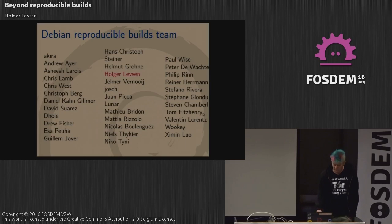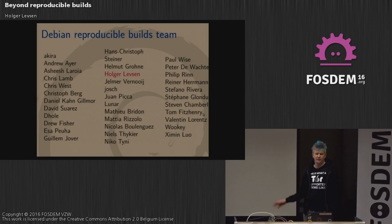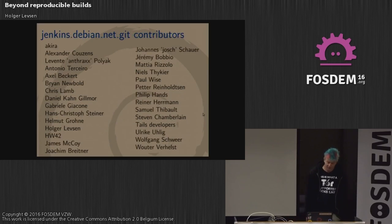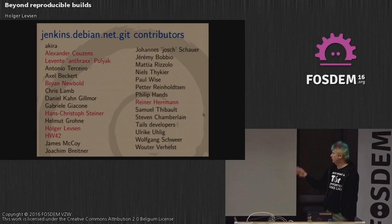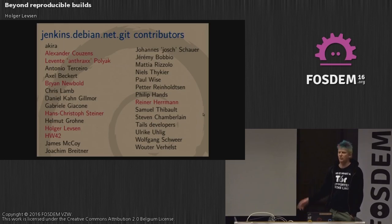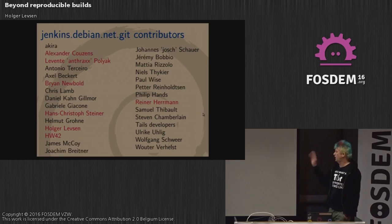As I said, I am just one of these people. This is the Debian Reproducible Builds team, and there are many more people working on it. These are all the contributors to the Jenkins stuff, including those who contributed non-Debian related commits. Hans Christoph does stuff on FDroid. It started as Debian but has become a cross-distro project.